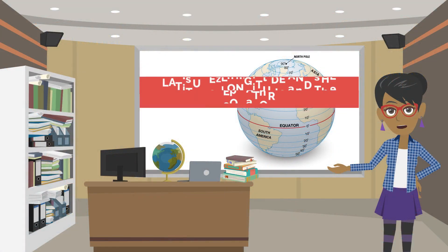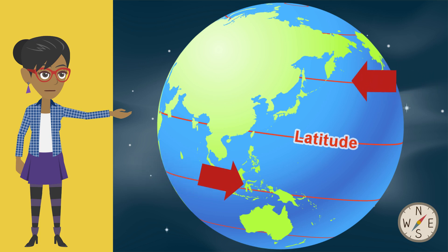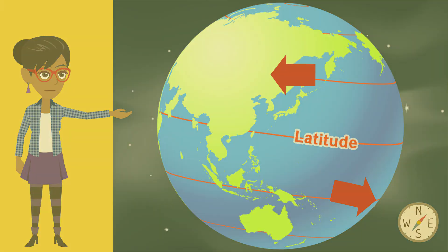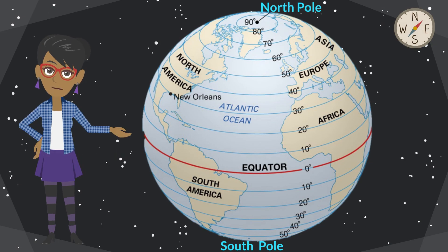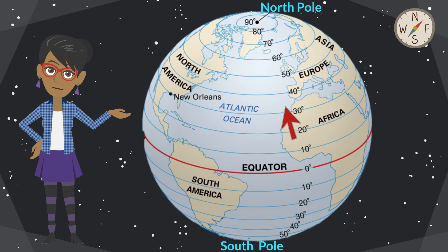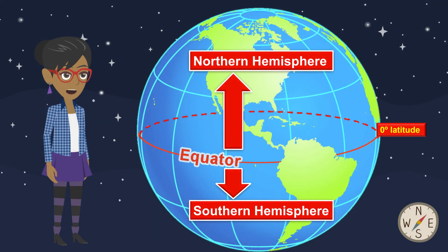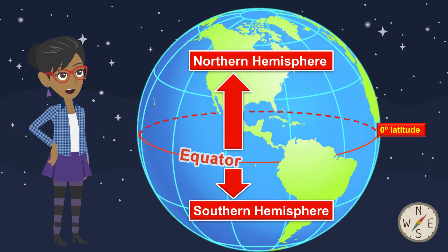We will now look at the concepts of latitude, longitude, and the equator. The imaginary lines running horizontally, or east and west across a globe or map, are called lines of latitude. Latitude is expressed in degrees and ranges from zero degrees at the equator to 90 degrees at the poles — 90 degrees north for the North Pole, or 90 degrees south for the South Pole. Latitude indicates how far north or south of the equator a town or country is on the planet. The equator also divides the planet into a northern hemisphere and a southern hemisphere.